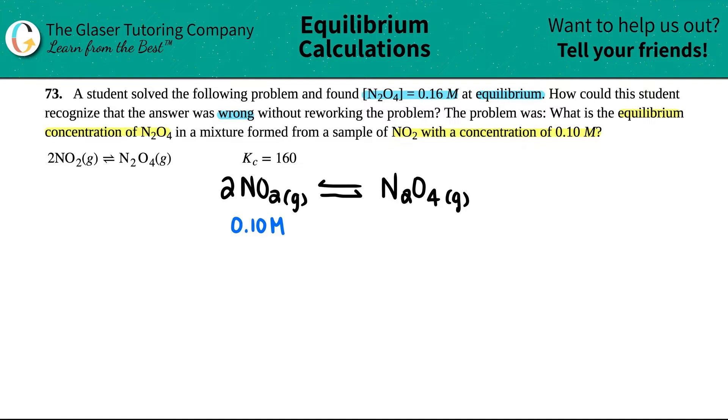Now the student found out that this answer was 0.16 molarity. They told us that this answer was wrong. So we know that the student was unfortunately wrong, but how can we fix this problem on a test or a quiz so that you can figure out that you got the wrong answer? We always do checks and then we can keep going.